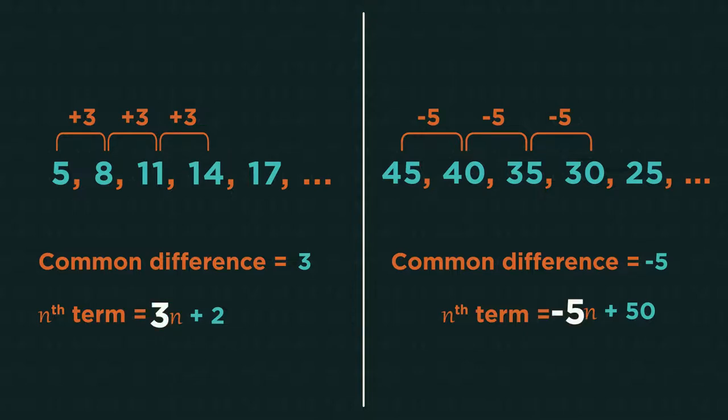The number in front of the n is always the common difference. So because the common difference was minus 5, the nth term rule is minus 5n.